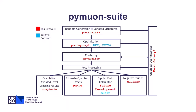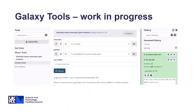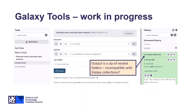Galaxy seems like an ideal platform for that. So we started converting our command line tools into Galaxy tools, and this is a work in progress. So far we've run into one significant issue, which is that our code outputs lots of nested folders, and that doesn't seem to be particularly compatible with Galaxy collections. If you have advice on this front, we'd be interested to hear it.